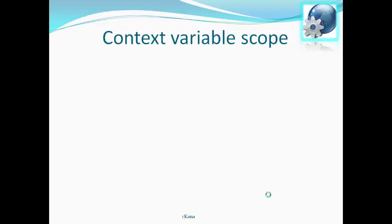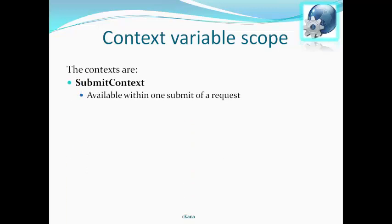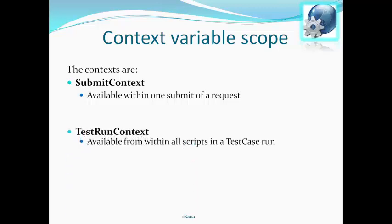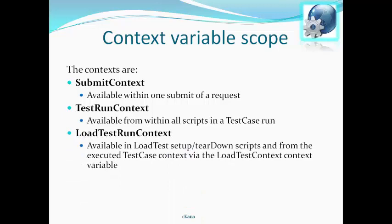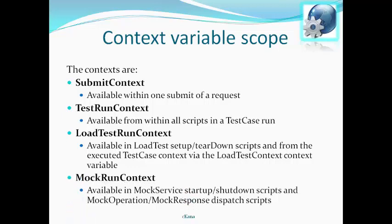Context variable scope: when scripting inside a run, there is always a context variable available for getting or setting context-specific variables. The contexts are: submit context, whose scope is within one submit of a request; test run context, available from within all scripts in the test case run; load test run context, available in load test setup or teardown scripts and from the executed test case context via the loadTestRunTestContext variable; and mock run context, available in mock service startup and shutdown scripts, and mock operation and mock response dispatch scripts.